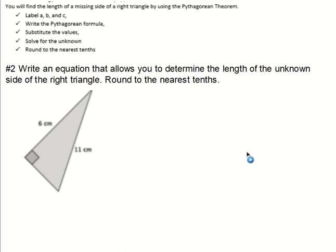Here's the solution to number two. Write an equation that allows you to determine the length of the unknown side of the right triangle, round to the nearest tenth.